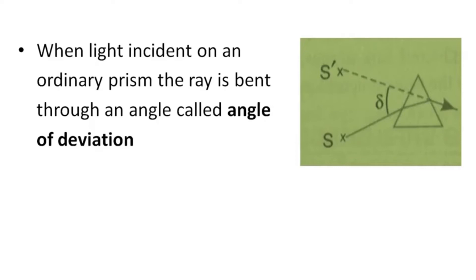When light is incident on an ordinary prism, the ray is bent through an angle called the angle of deviation. The source of light emits a ray that refracts through the prism, and this refracted ray can be imagined as originating from a virtual source S'. The angle made between S' and S is known as the angle of deviation. Using this theory, we can explain the theory of Fresnel's biprism.